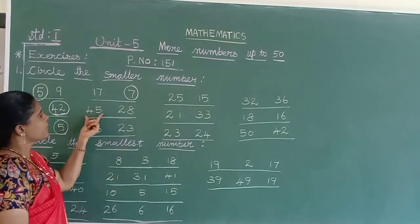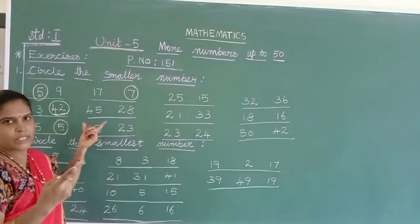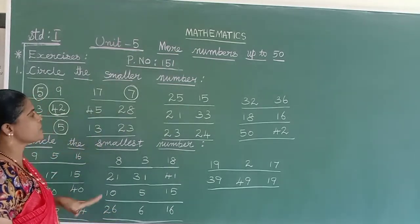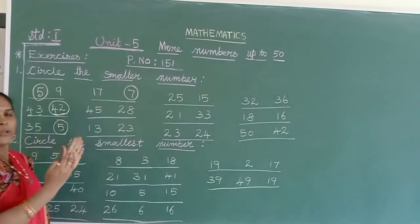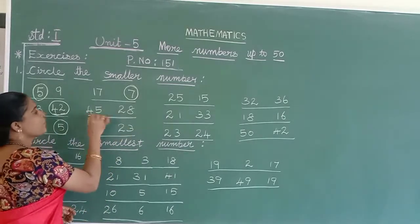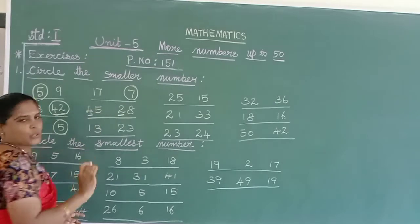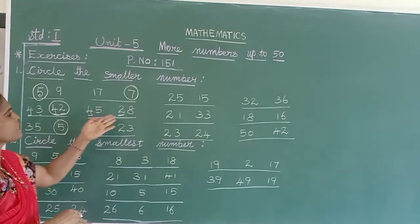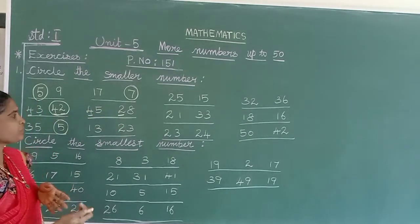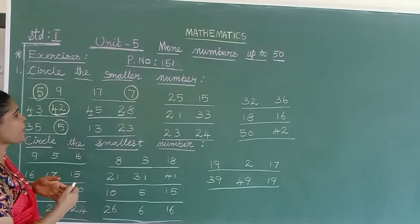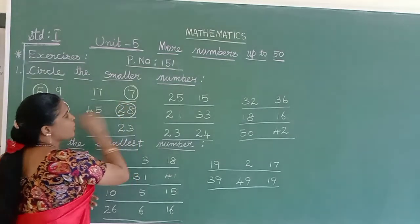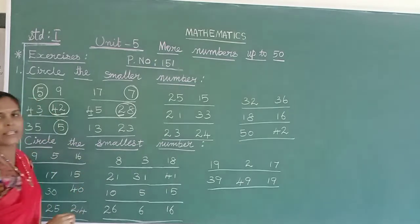Here both are 2-digit numbers. Come to the tens column — 4 and 2, which are different. So which is smaller? 2 is smaller than 4. So you can circle 28.